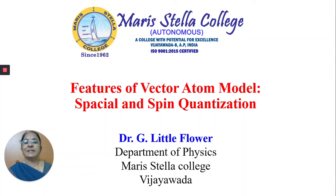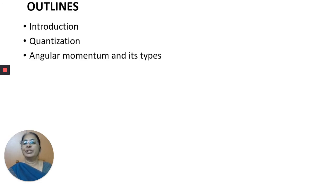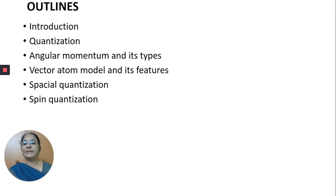Hello viewers. Today I will be explaining the features of vector atom model. The outlines are: quantization, angular momentum and its types, vector atom model and its features, what is spatial quantization, and what is spin quantization.